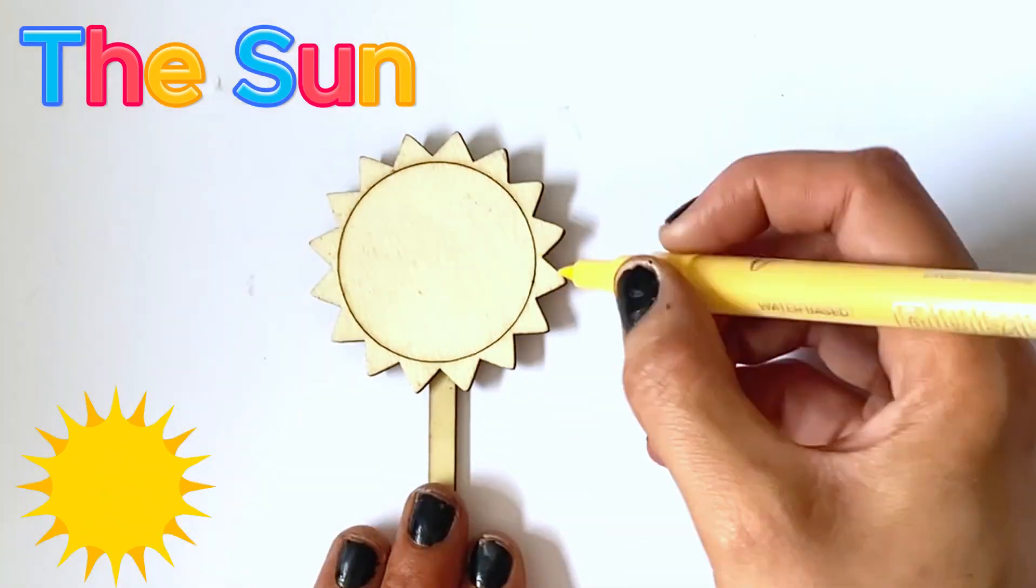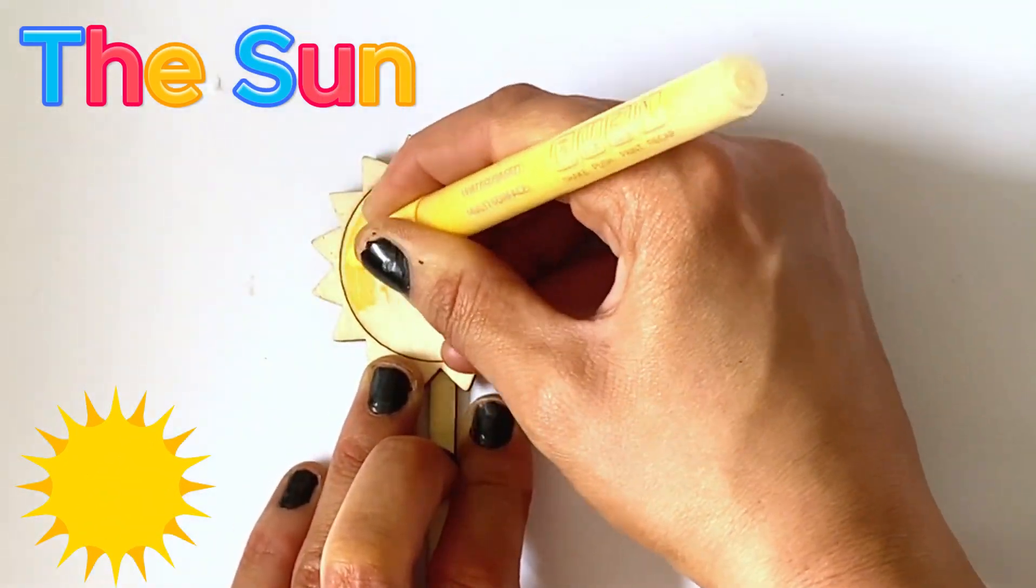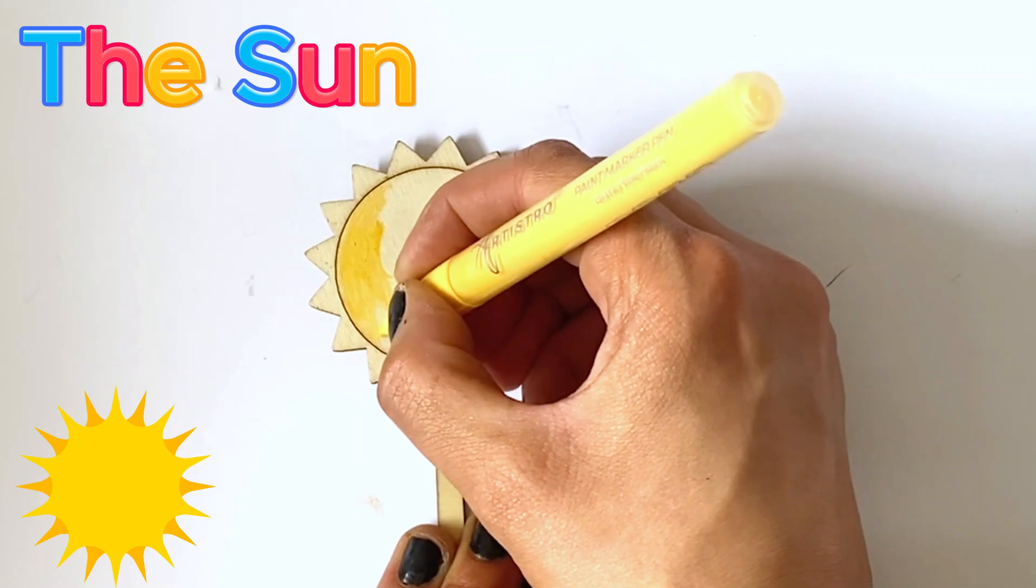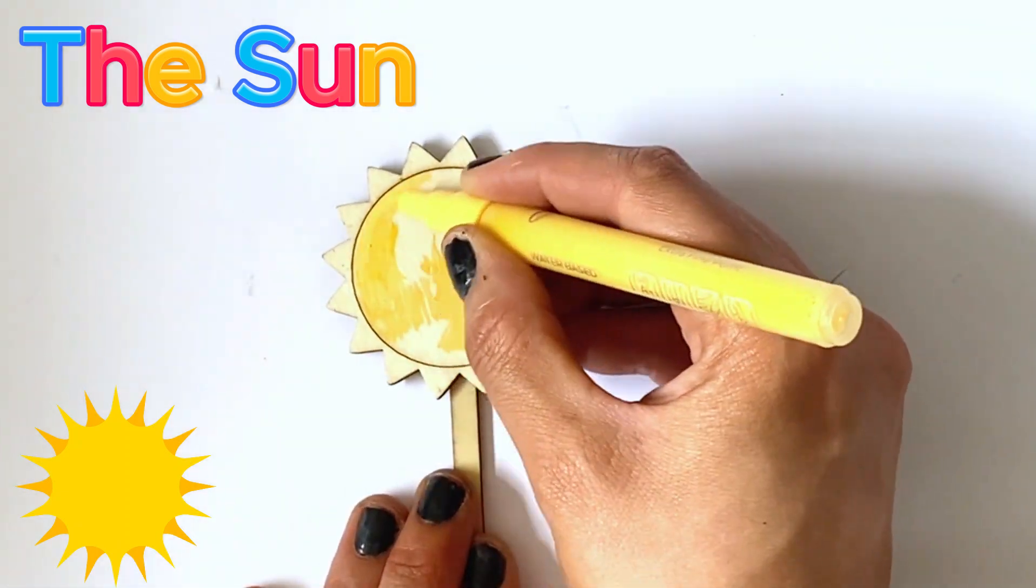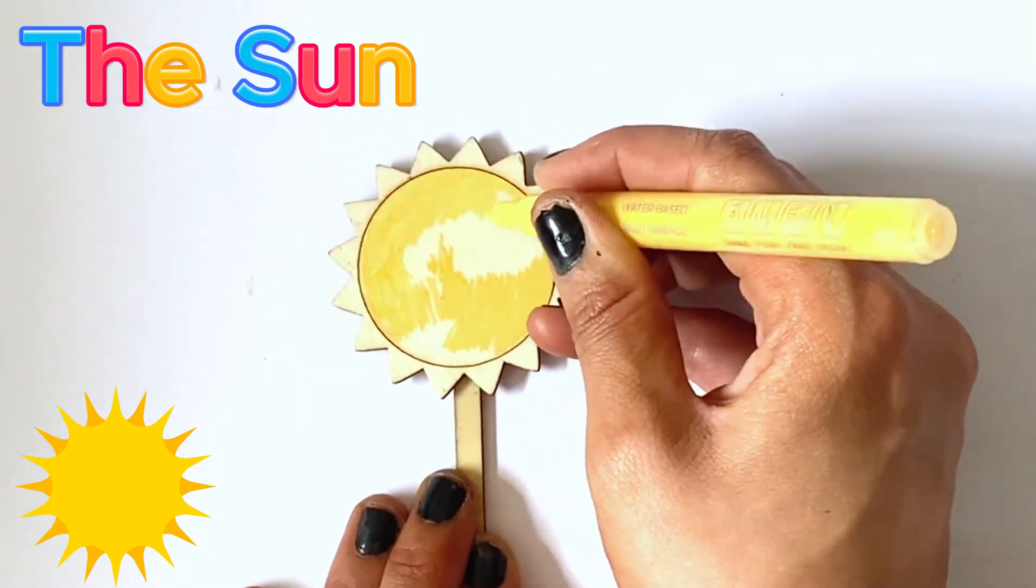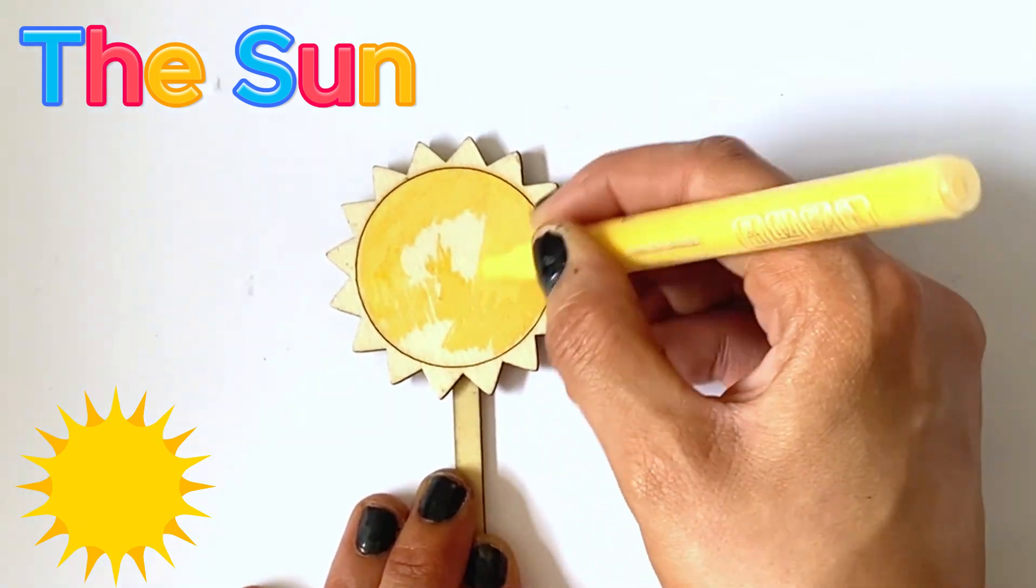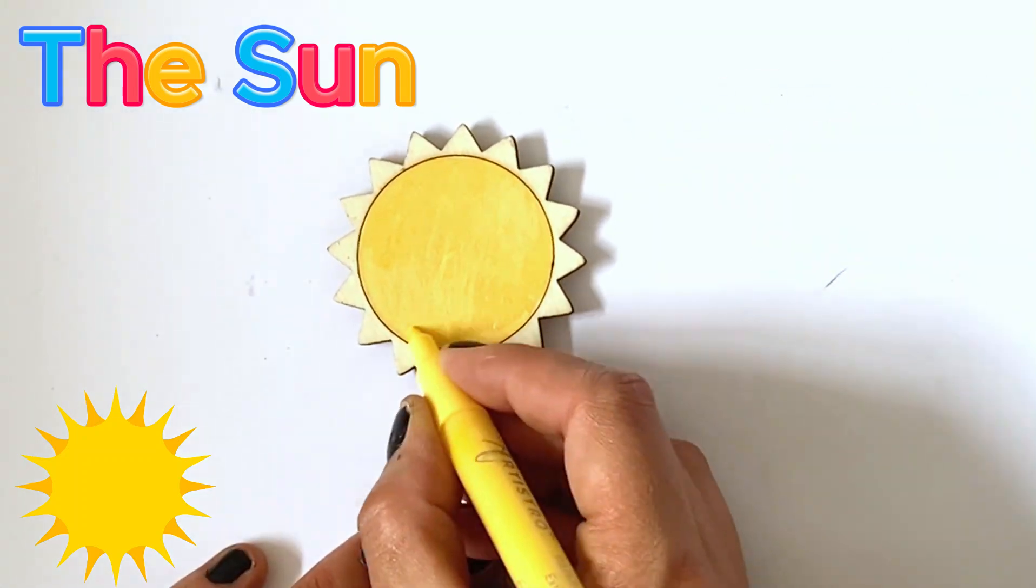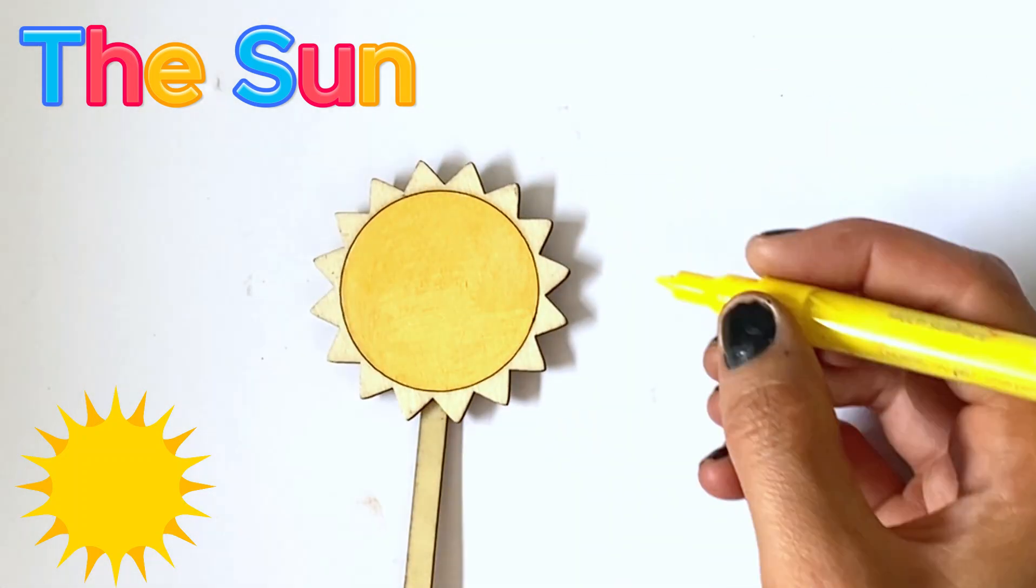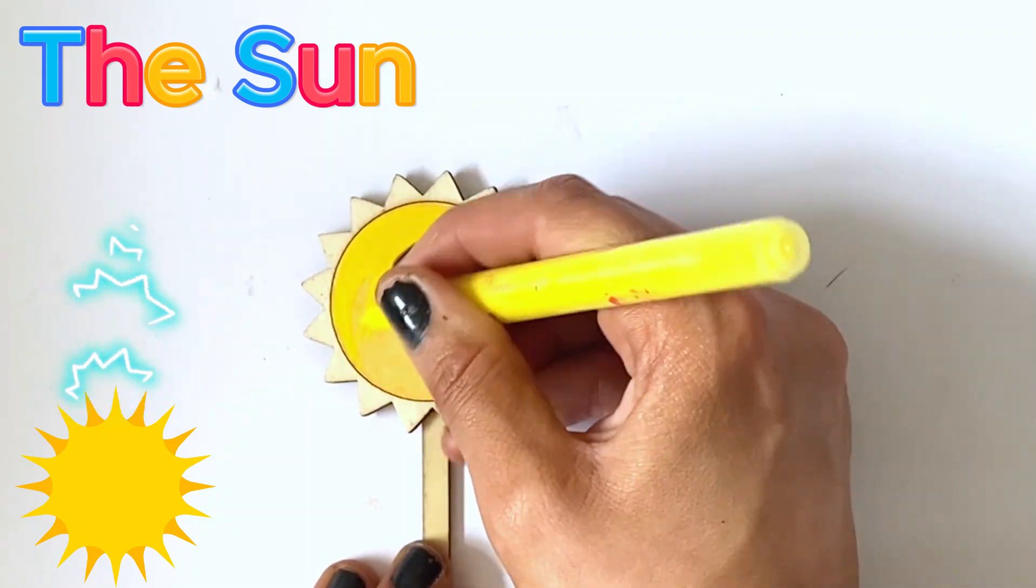So the first thing we're going to paint is the Sun. There are billions of suns, or stars, scattered across the Milky Way galaxy. And our Sun is our primary energy source, which manifests itself with light and huge amounts of heat. It exerts a massive gravitational pull on the planets, making them spin around the Sun.